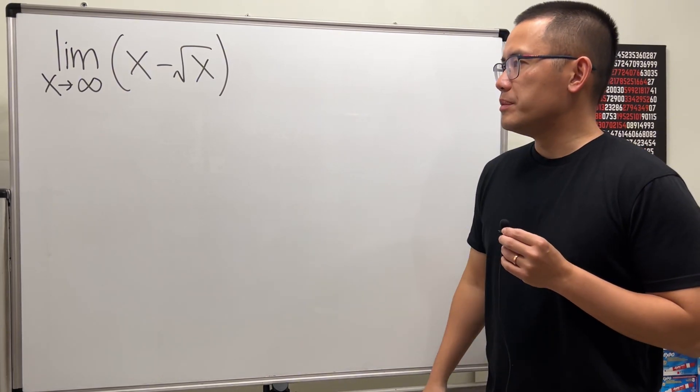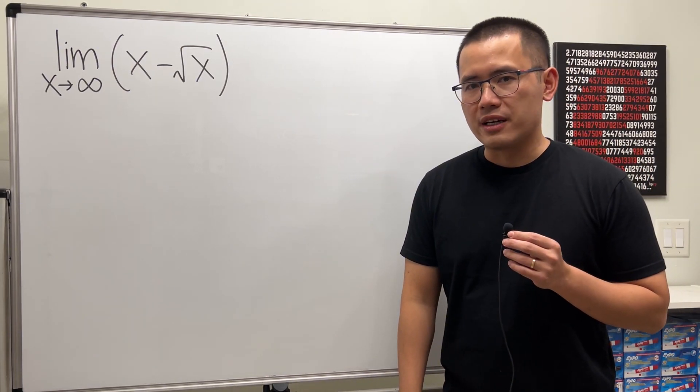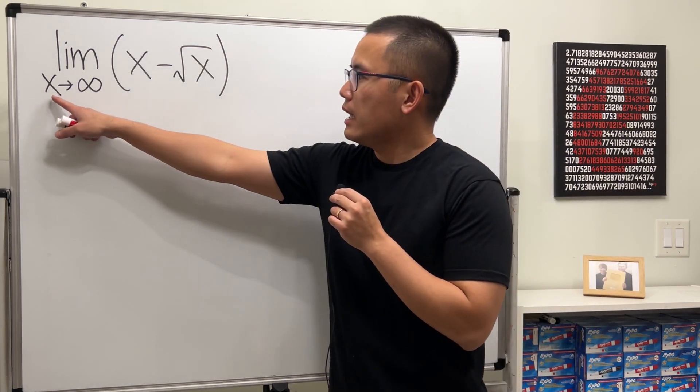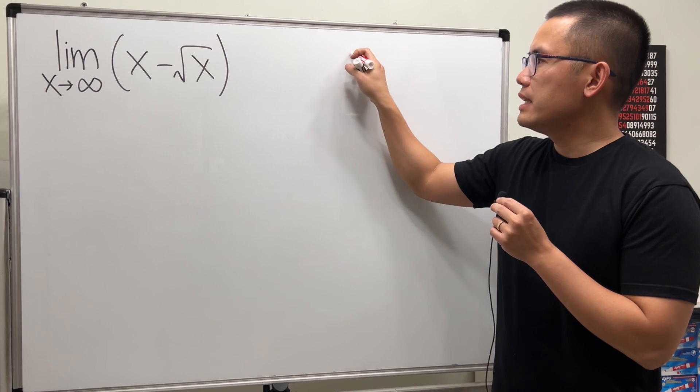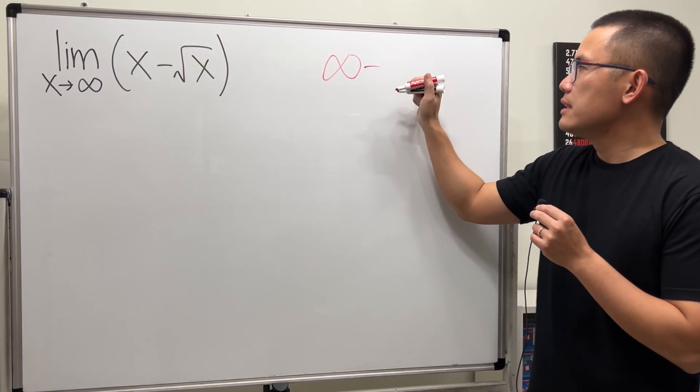We have a simple looking limit but we have to be really careful. If you look at x approaching infinity, if you put infinity into both axes we get infinity minus square root of infinity.